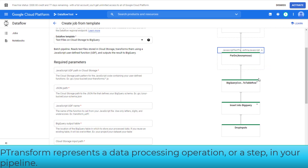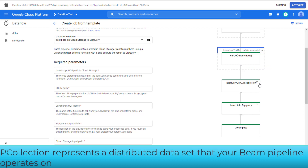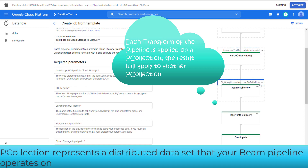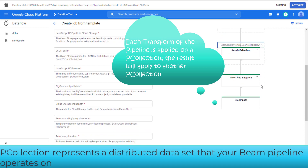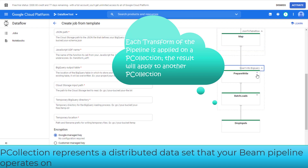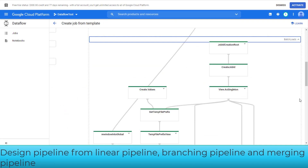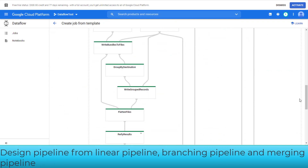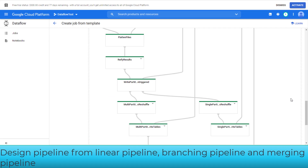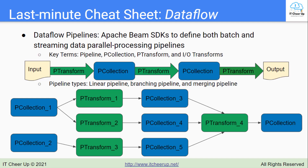The distributed data set that your Beam pipeline operates on is called P-Collection. You can click each step, and you will see the Linear Pipeline, Branch Pipeline, and Merge Pipeline in this example. I've put the abstract diagrams here for you to remember the key terms in the pipeline: P-Collection, P-Transform, and IO-Transforms that we just went through.